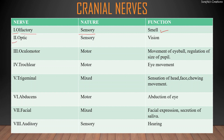The second cranial nerve is the optic nerve; it is also sensory in nature and is concerned with the sense of vision. The third cranial nerve is the oculomotor nerve; as the name indicates, it is a motor nerve concerned with movement of the eyeball, regulation of the size of the pupil, and maintaining the opening of the eyelid. The fourth cranial nerve is the trochlear nerve; it is motor in nature and innervates the superior oblique muscles of the eye, concerned with eye movement. It is the smallest cranial nerve.